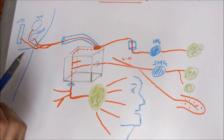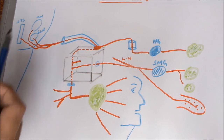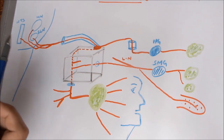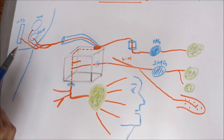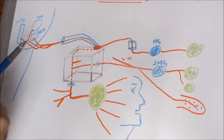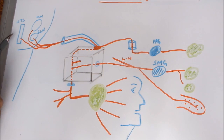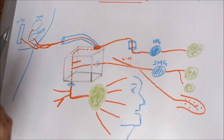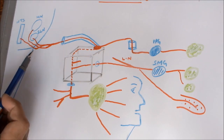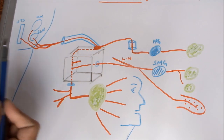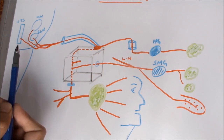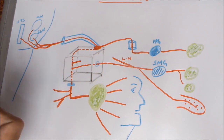The facial nerve arises from the pontomedullary junction — this is the pons and this is the medulla — and it is attached to the inferior border of the pons by two roots: the sensory and the motor root. The motor root arises from the motor nuclei, and the sensory root arises from the nucleus tractus solitarius and the salivatory lachrymatory nuclei. It arises just medial to the origin of the eighth nerve, that is the vestibulocochlear nerve.